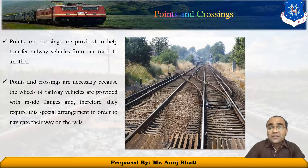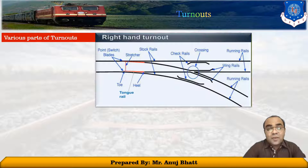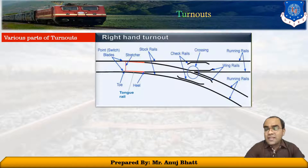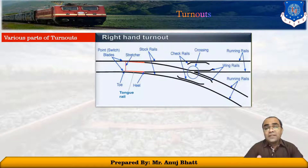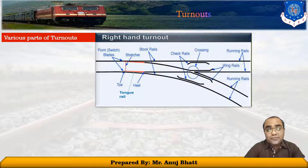A turnout is an arrangement of points and crossings with lead rails by means of which the rolling stock may divert from one track to another track. Talking about the direction of turnouts, a turnout is designated as a right-hand or a left-hand turnout, depending on whether it diverts the traffic to the right or to the left direction. The direction of a point is known as the facing direction if a vehicle approaching the turnout has to first face the thin end of the switch.